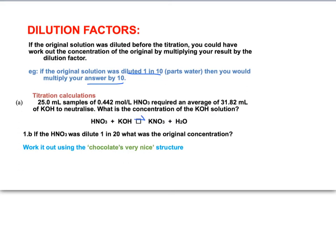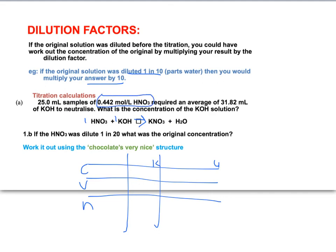So here's another titration example. That's an equation provided. You'll see from the equation this time that it's a 1 to 1 ratio. So let's just quickly put that whole story into the chocolate's very nice grid. You would put the units in, and you want to figure out what's the known and the unknown. Remember at the top it goes K U. So reading the story it says 25 mL samples of this concentration of nitric acid, which tells us that's the known. So we've got HNO3, and we put 0.442 as its concentration, and its volume is 25 mL, so 0.025 goes here.